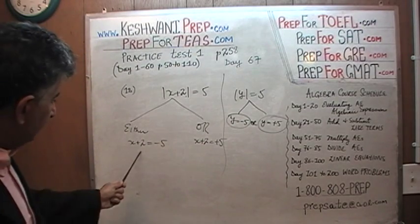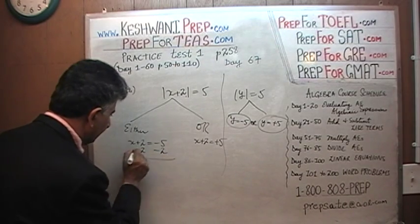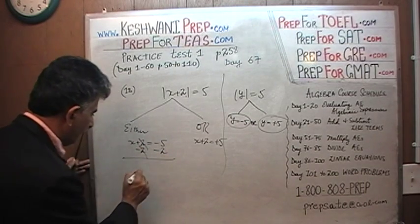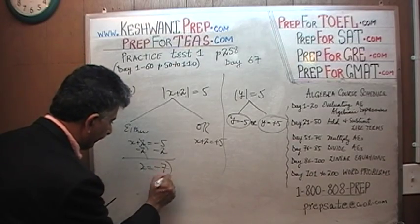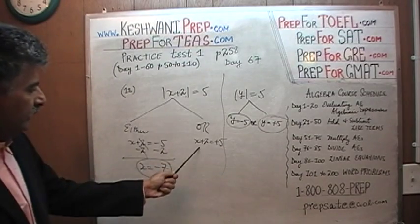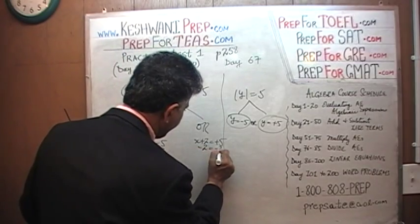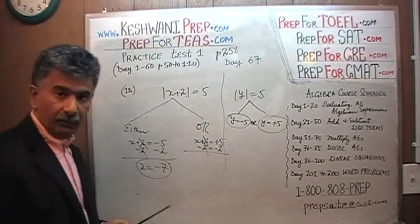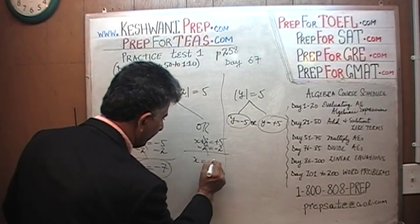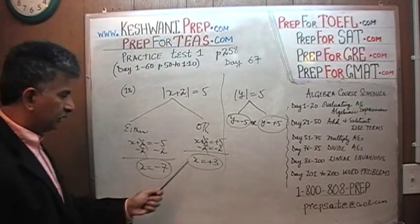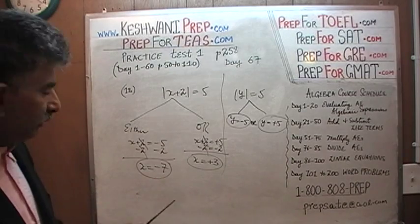Let's solve for x. Subtract 2 from both sides — we subtract 2 from both sides. This 2 is going to cancel out and we find that x is equal to negative 7. That's one answer. In the other case, subtract 2 from both sides again, and x is equal to positive 5 minus 2, which is positive 3. Those are the two possible answer choices, and if you put them back you'll see that they both make sense.